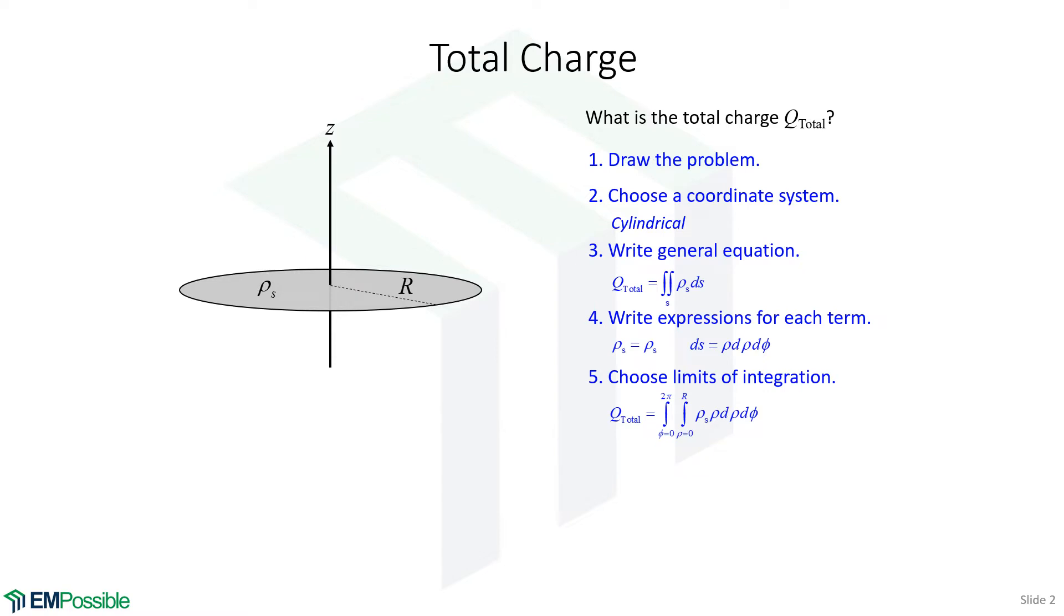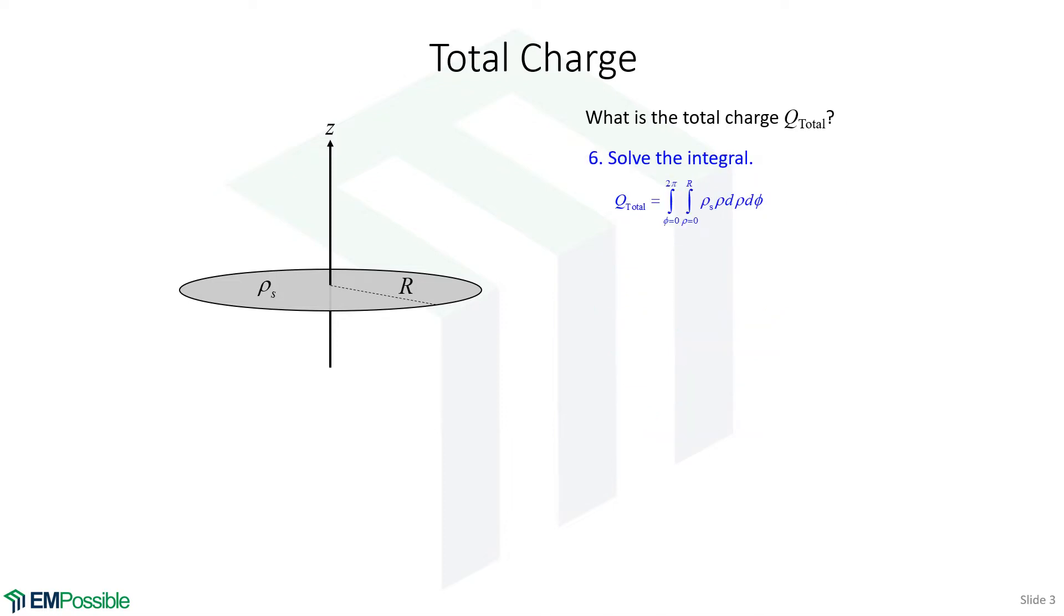We always choose these limits of integration so that we cover the entire length, area, or volume with no voids and no overlaps. At this point, the electromagnetics is done, and we can hand this equation over to a mathematician, and they could solve this to get total charge for us without having to consider any more electromagnetic anything. So here's the integral we want to solve. What I like to do first is to isolate the integral over rho. We need to integrate rho d rho from zero to r. The anti-derivative of rho is rho squared over two.